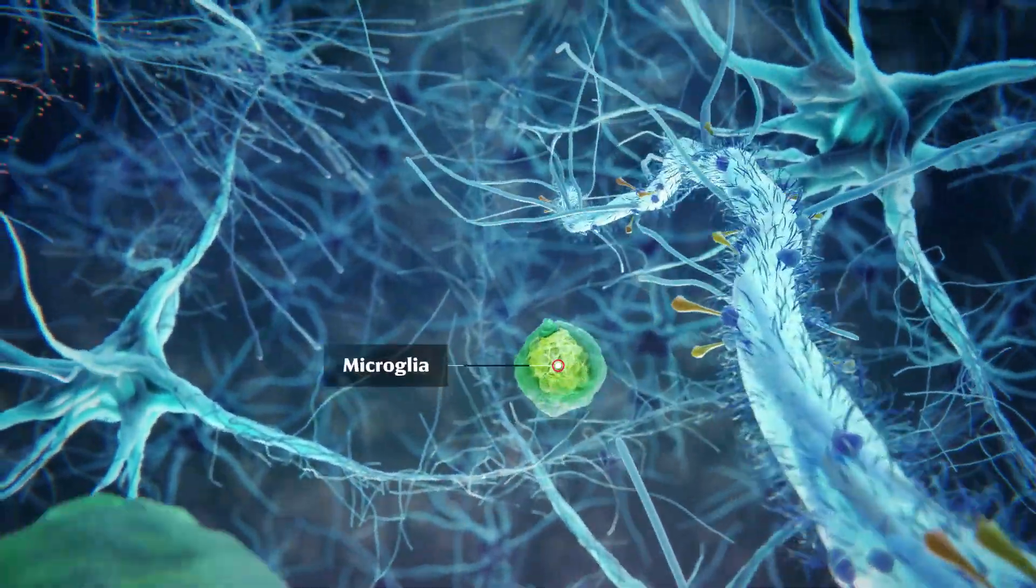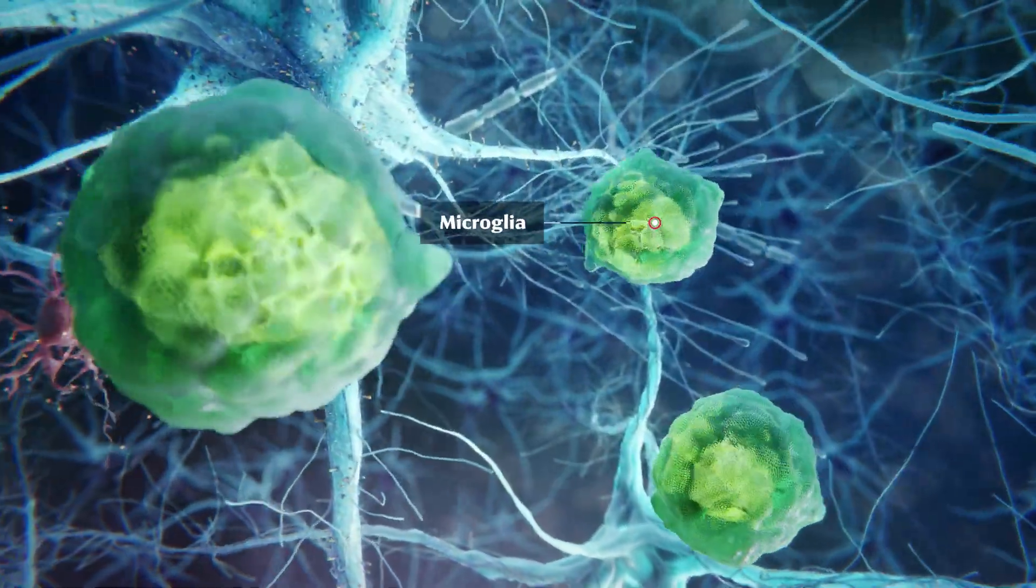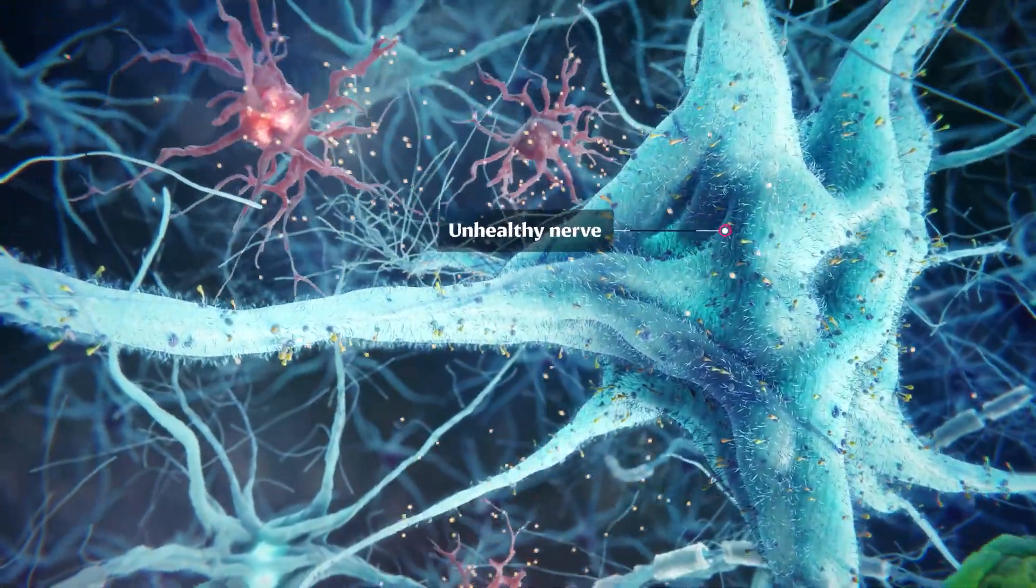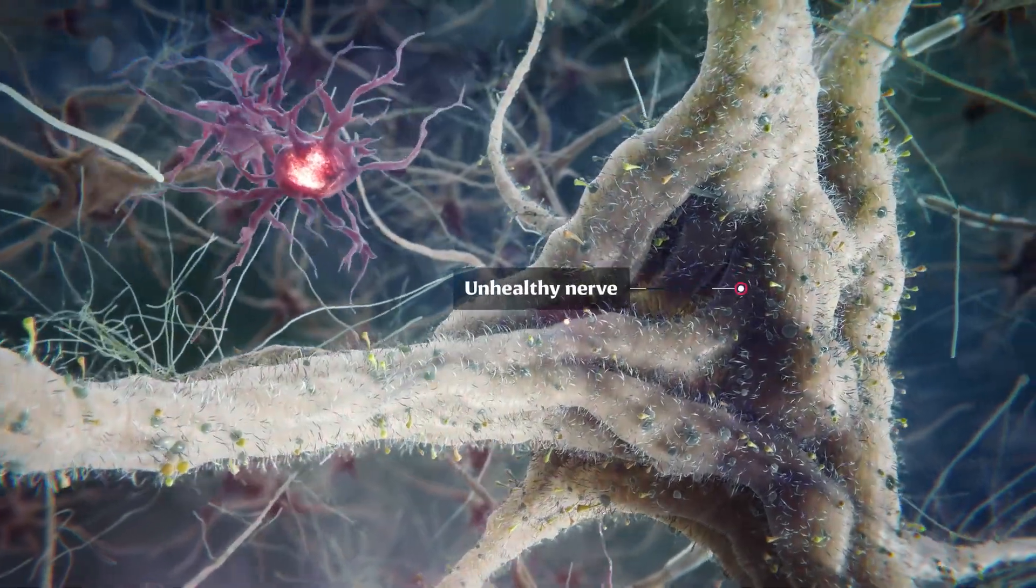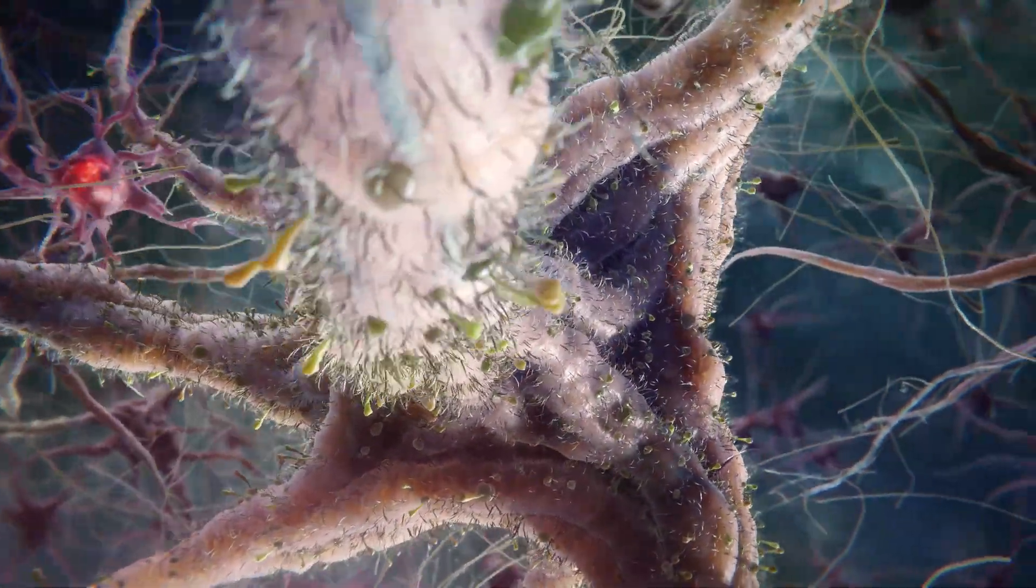Microglia, other important brain cells, drive inflammatory responses against pathogens in the brain and spinal cord. In ALS, astrocytes lose their nerve support and microglia promote chronic inflammation. Both of these contribute to loss of function and nerve cell death.